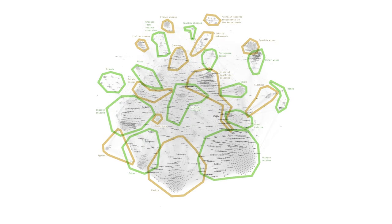So what does this network map tell us about European cuisine in Wikipedia? Let me start by a few simple observations. National cuisines are very important, but this is not a map of national cuisines. Types of dishes are important, but this is not a map of dishes. Ingredients are important, but this is not a map of ingredients. There is not one single way the articles are organized, but many, and they coexist.